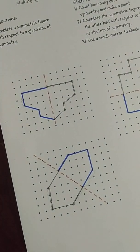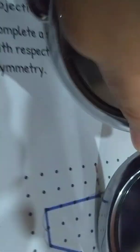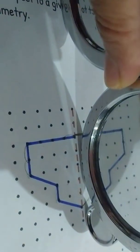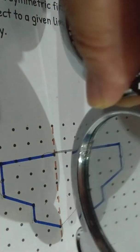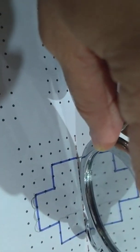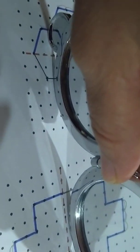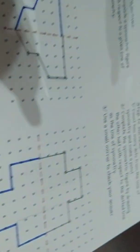Now we are going to check using the mirror. Let's check the first one. My mirror is circular — so the drawing should be like that. When you move it, see? It is the same. You better use a square mirror. Now we check this one. If you use a square mirror it's much better. See — the figure is the same. The reflection of the first half should be like that. See? It's the same.